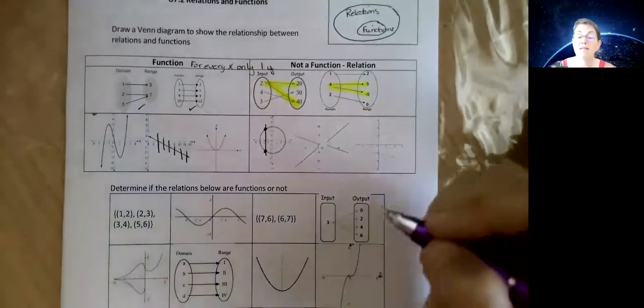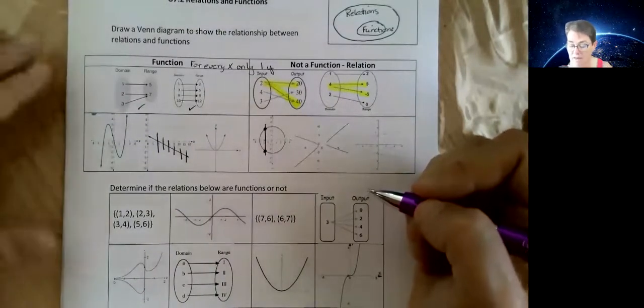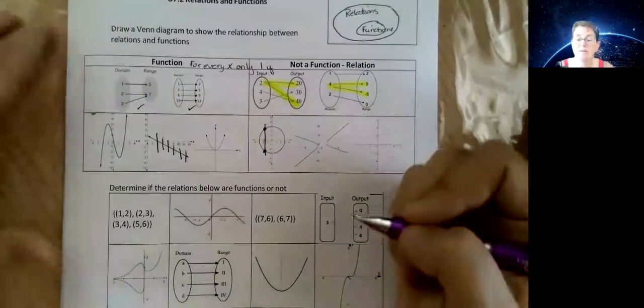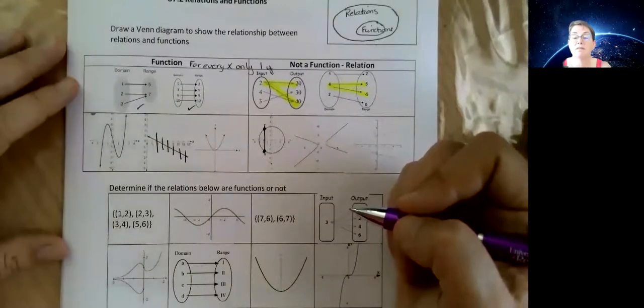So then, now that you know the vertical line test, and as I said, it's down at the bottom. So if you hit once, it's a function. If you hit twice, more than once, it's no longer a function.